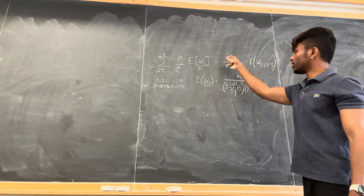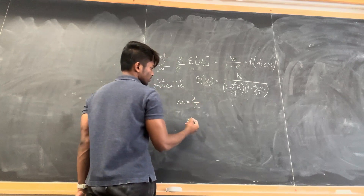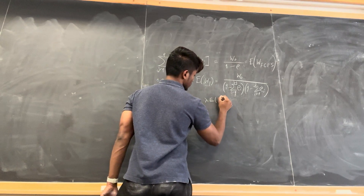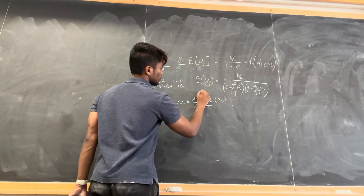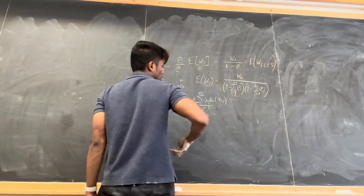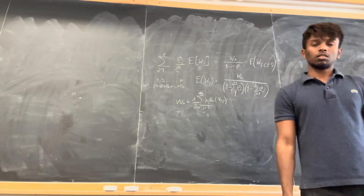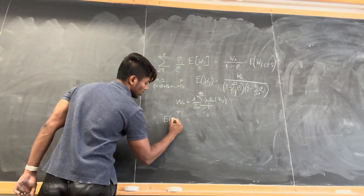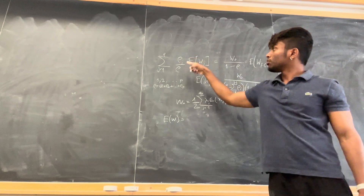In this relationship, w0 for each of the classes is: w0 is equal to half times d, which is λ times E[x]. For all the classes, it is the jth class, so we have to sum up across all the classes — j is equal to 1 to p, if we have p classes. These are the w0 values. The complete expected waiting time E[w] is: p of w0 for E[wj] is this.